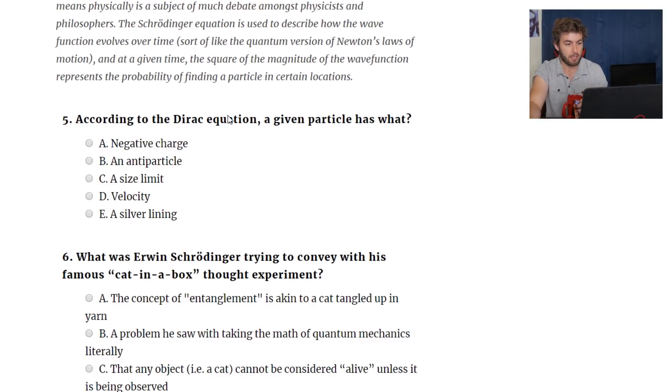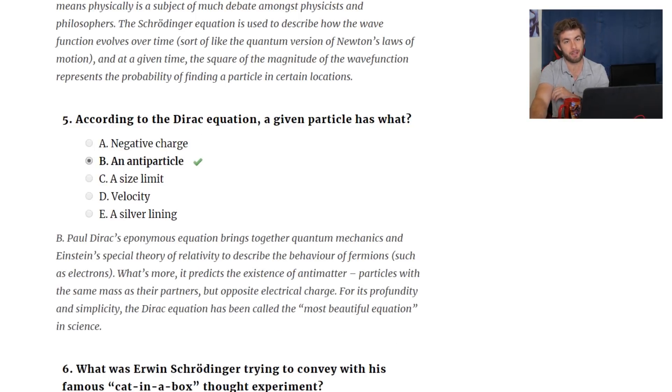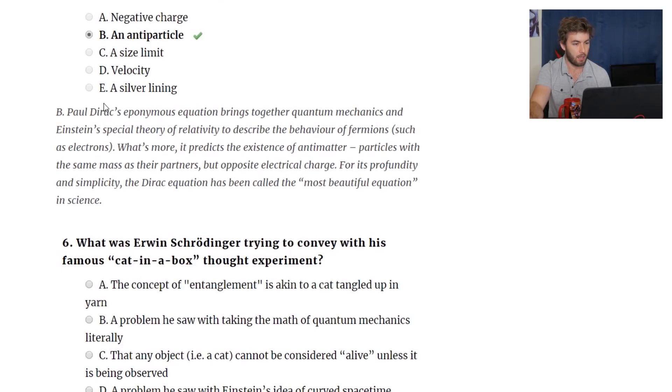According to the Dirac equation, a given particle has what? Negative charge, an antiparticle, a size limit, velocity, or a silver lining. Wouldn't that make it heavy? If you guys got that joke, that would just make me so happy. I don't think anyone will get that joke. An antiparticle is clearly it. You've got the Dirac spinner with the extra components. Eponymous. I've never heard that word before. Brings together quantum mechanics and special relativity to describe the behavior of fermions, such as electrons, which are spin half particles. What's more, it predicts, or spin integer, half integer spin, I should say. But oftentimes, okay, whatever.